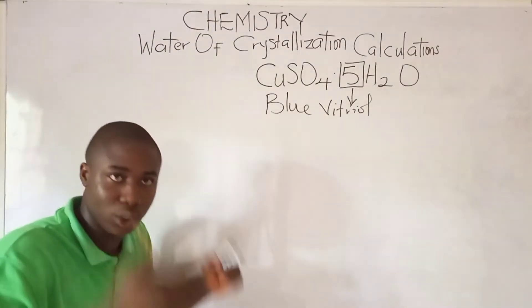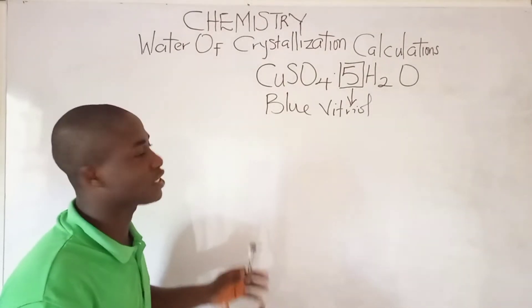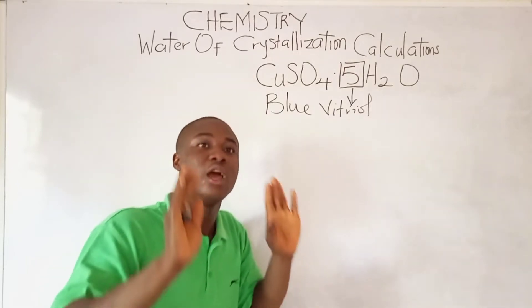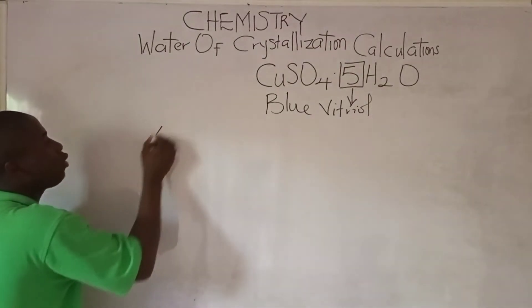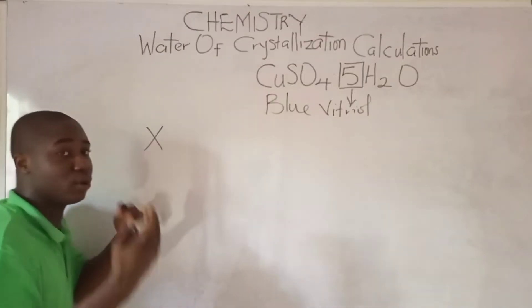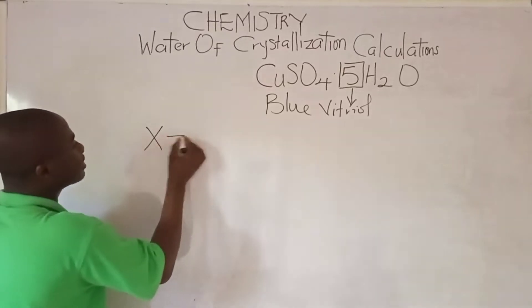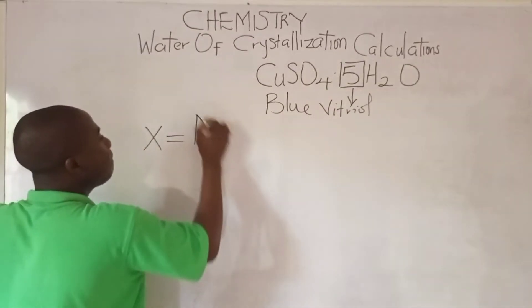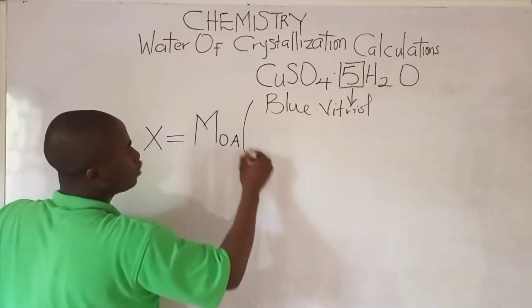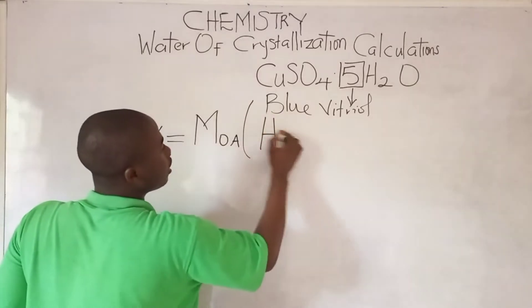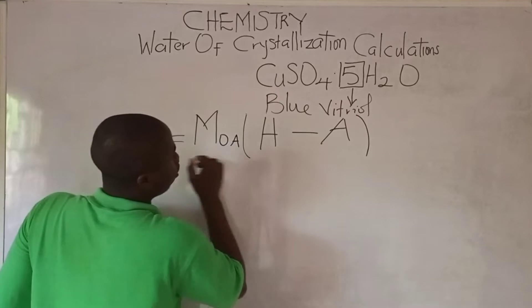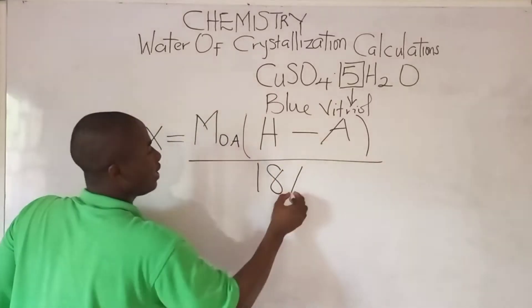Now, what formula do we use to solve problems pertaining to this activity? To calculate the number of moles of water of crystallization in a compound, we call it X. You can use any symbol — N, Y, Z, or any you prefer. So: X = MOA × (H − A) / (18A).